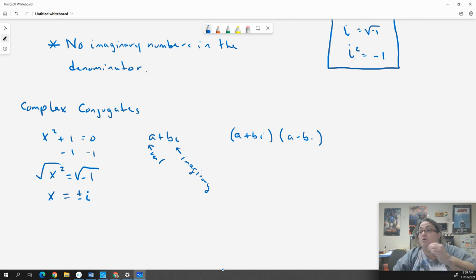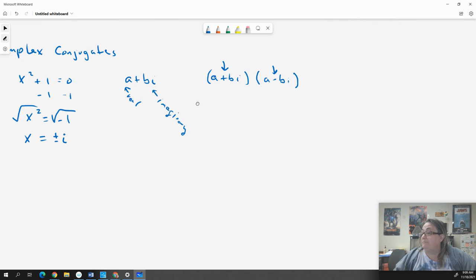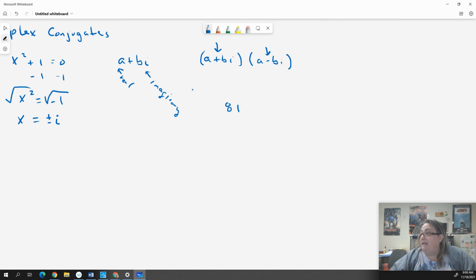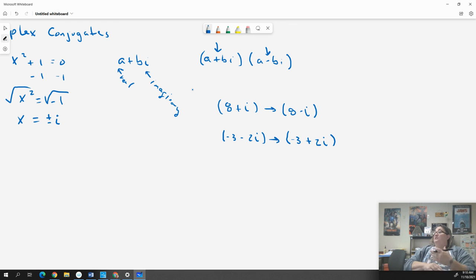Finding the conjugate is super easy. It doesn't matter what the sign of a is in either of these - it will stay the same. What changes for the conjugate is the sign in the middle. So if I have 8 plus i, its complex conjugate would be 8 minus i. If I have negative 3 minus 2i, its conjugate would be negative 3 plus 2i.